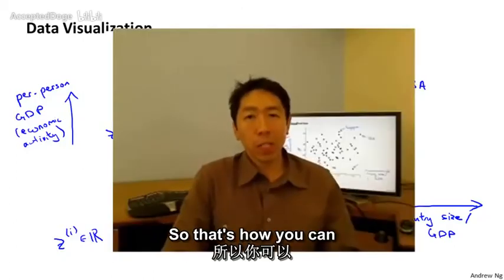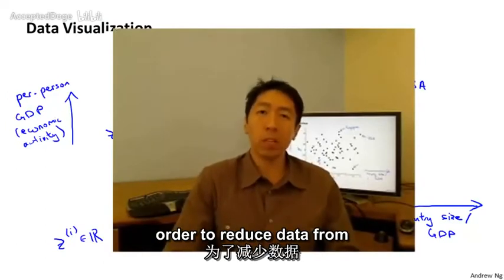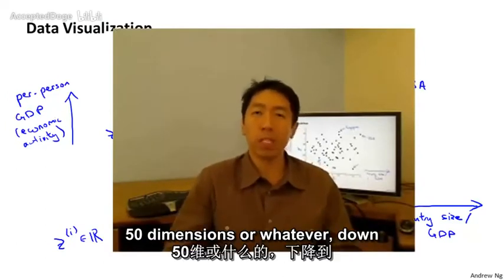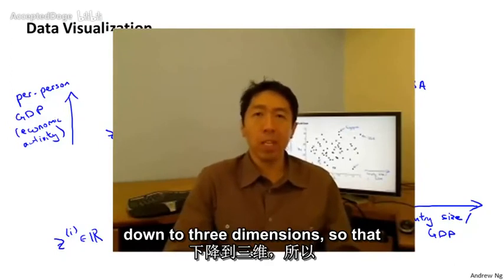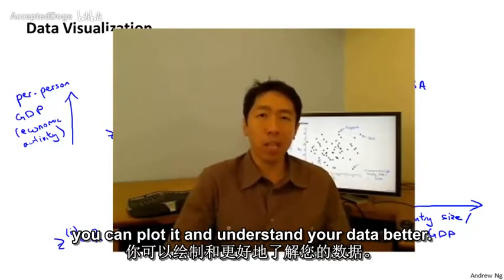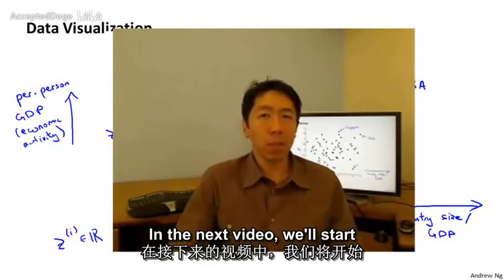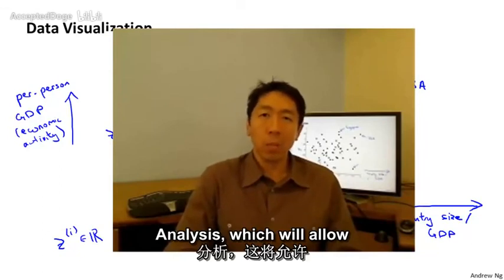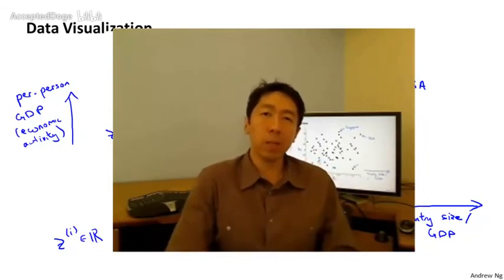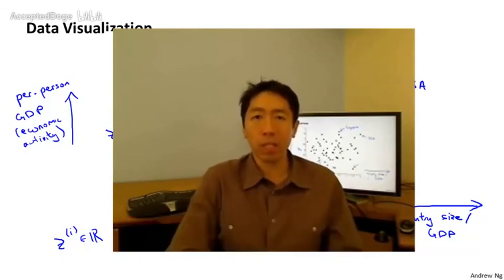So that's how you can use dimensionality reduction in order to reduce data from 50 dimensions, or whatever, down to two dimensions or maybe down to three dimensions, so that you can plot it and understand your data better. In the next video, we'll start to develop a specific algorithm called PCA, or principal components analysis, which will allow us to do this and also do the earlier application of compressing the data.